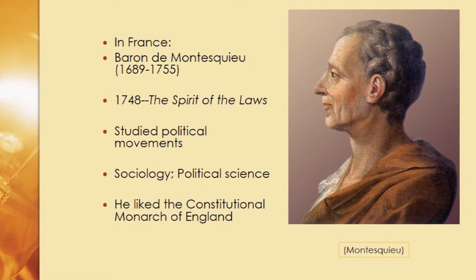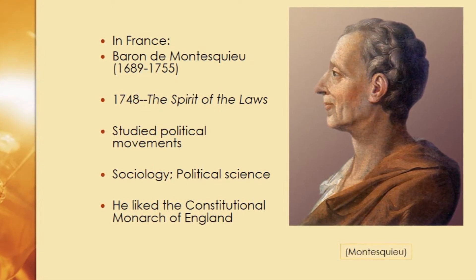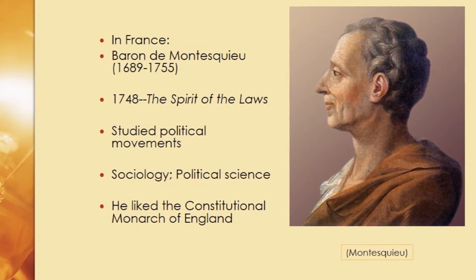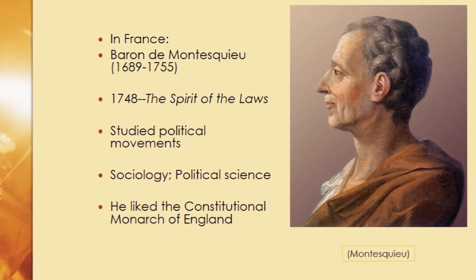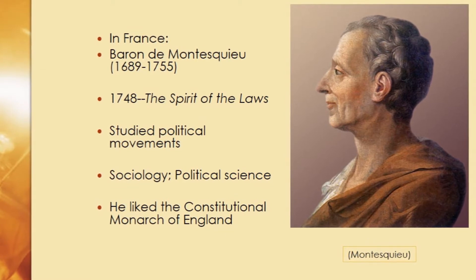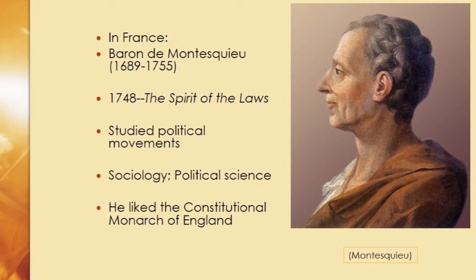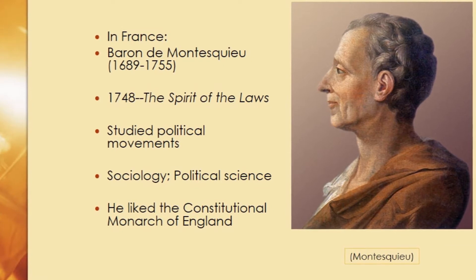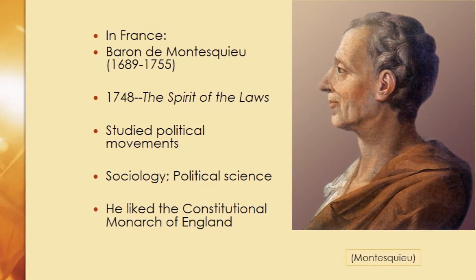Montesquieu started to look at how governments were formed — what the foundational qualities of absolutism or constitutional monarchy are. He definitely liked England's constitutional monarchy more than he liked his own French government.